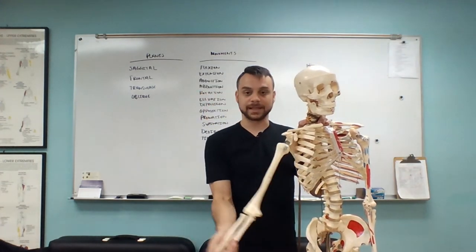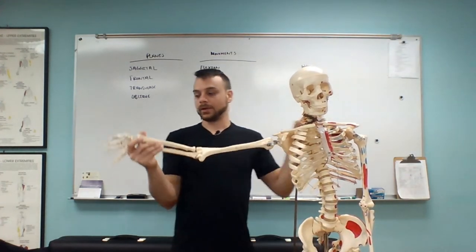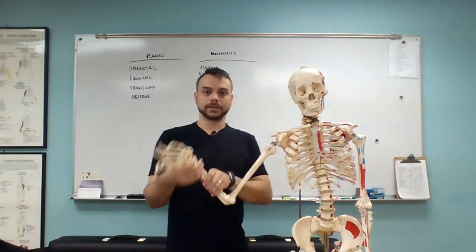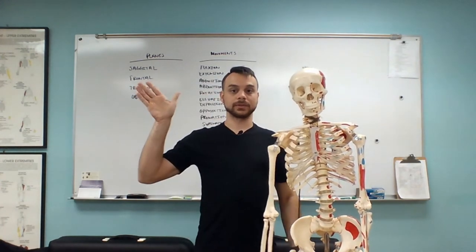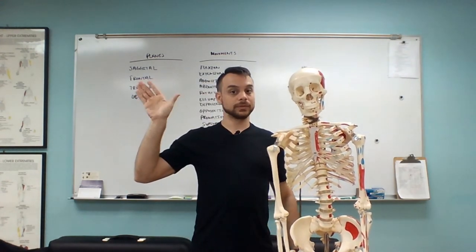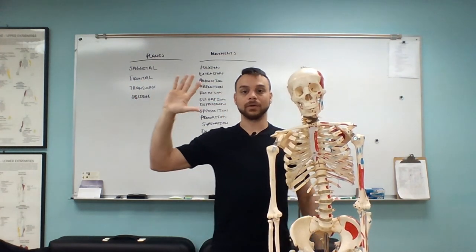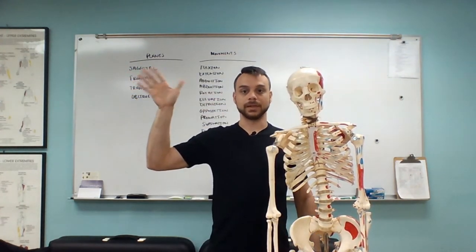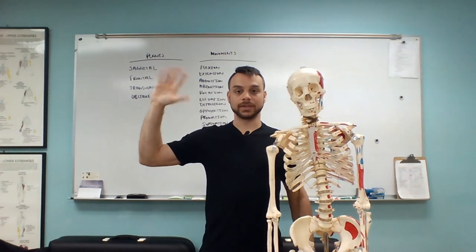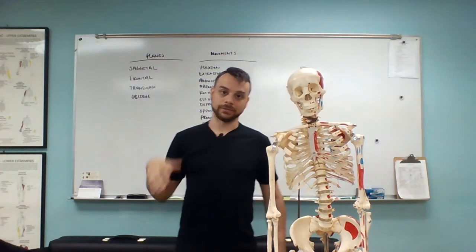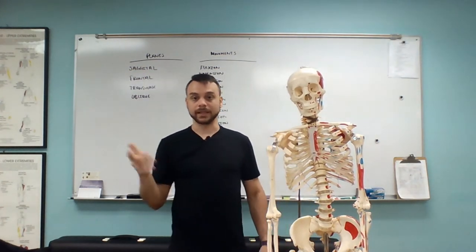Other joints that can deviate are your wrists. Just like you're waving — a nice subtle wave — we can have radial deviation and then ulnar deviation, deviating from one side to the other.